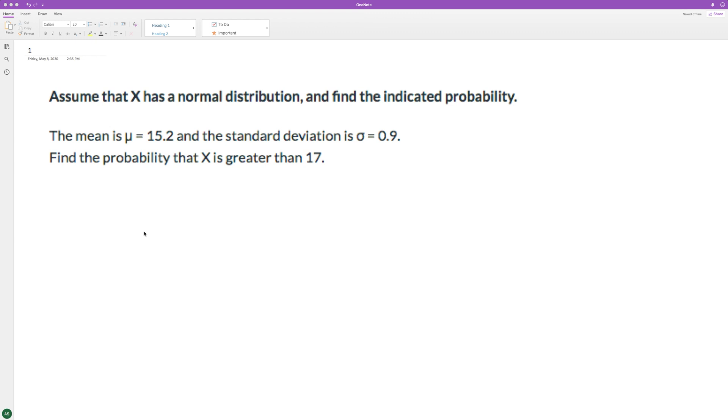Here at 15.2 and a standard deviation of 0.9, we want to find the probability that X is greater than 17. So this is just finding the Z-score in good old-fashioned Z-table.